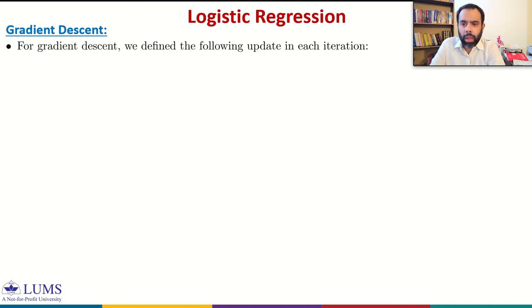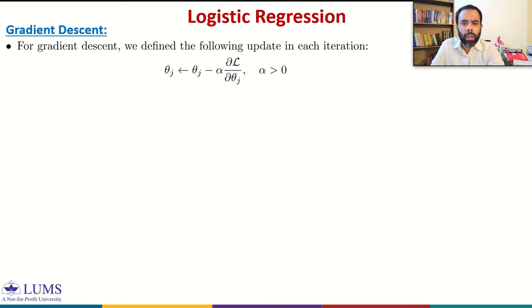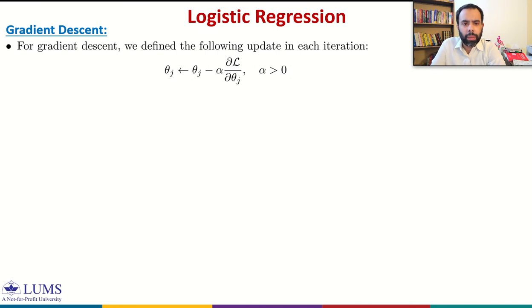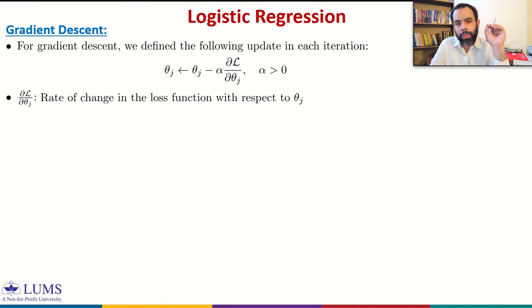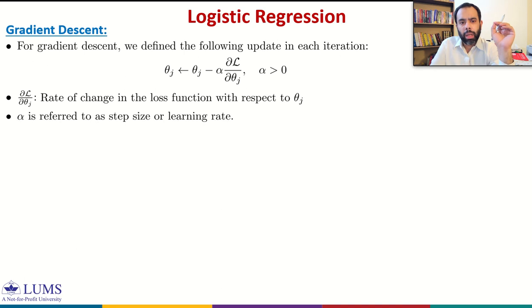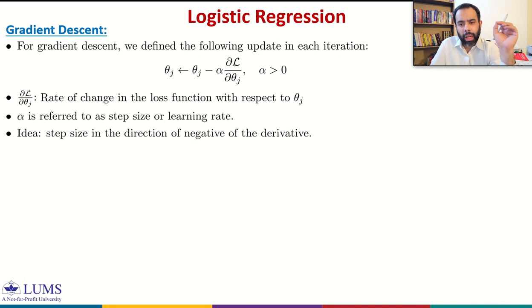We quickly recall gradient descent. For gradient descent, we defined this update in each iteration: a parameter θ_j is updated by subtracting α times the rate of change in the loss function with respect to θ_j, where α is called the learning parameter, which is greater than or equal to zero. The intuition is that this partial ∂L/∂θ_j defines the rate of change in the loss function with respect to θ_j, and α is the step size or learning rate. So we take a step in the direction of the negative of the derivative along each parameter.